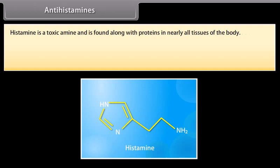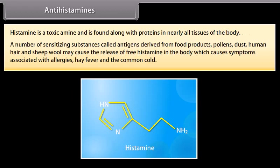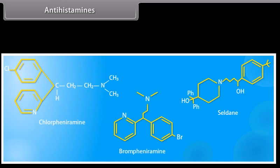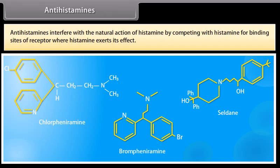Antihistamines: histamine is a toxic amine found along with proteins in nearly all tissues of the body. A number of sensitizing substances called antigens, derived from food products, pollens, dust, human hair and sheep wool, may cause the release of free histamine in the body, which causes symptoms associated with allergies, hay fever and the common cold. An antihistamine relieves these symptoms by blocking the action of histamine. For example, chlorpheniramine, brompheniramine and seldane. Antihistamines interfere with the natural action of histamine by competing with histamine for binding sites of the receptor where histamine exerts its effect.